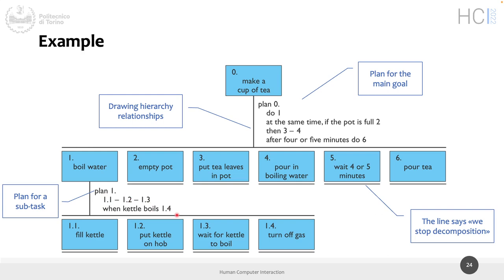Looking at this example, there is at least one thing that is missing — turn on the gas. You turn off the gas, but you never turn on the gas. So if you follow these instructions exactly twice, the second time you would never turn on the gas. We probably need to change something here — before putting the kettle on the gas, add 'turn on the gas.'